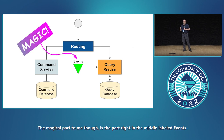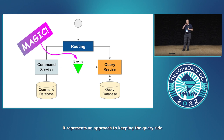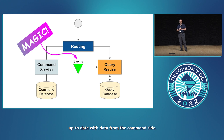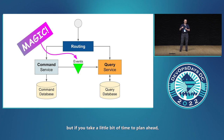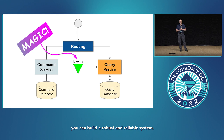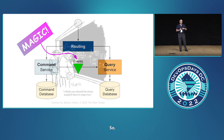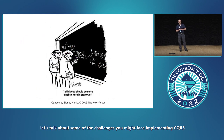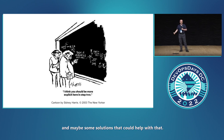The magical part to me, though, is the part right in the middle labeled events. It represents an approach to keeping the query side up to date with data from the command side. And wrapped in here is a lot of complexity, but if you take a little bit of time to plan ahead, you can build a robust and reliable system. So let's talk about some of the challenges you might face implementing CQRS and maybe some solutions that could help with that.